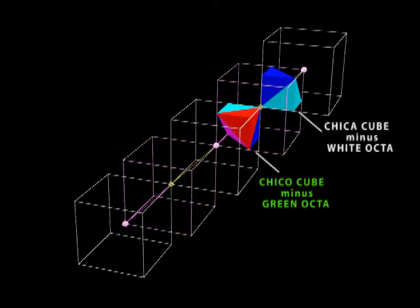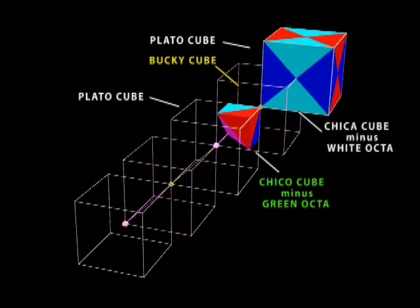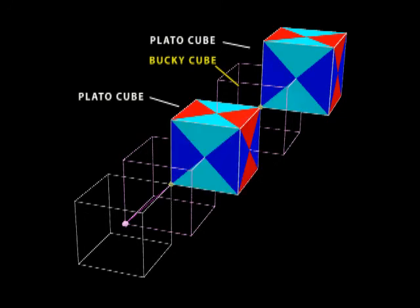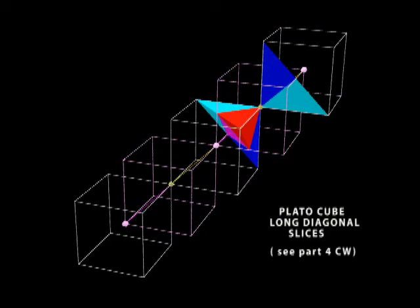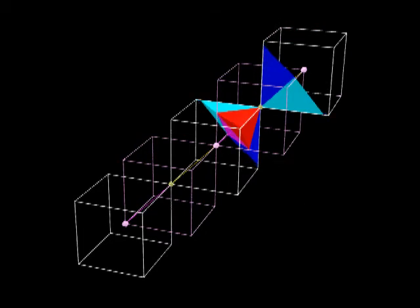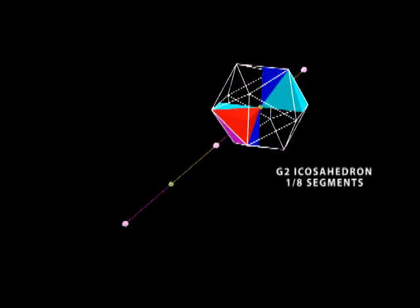So you can see in this setup, we are centered in the Bucky cube. And we're surrounded by two Plato cubes. So let's fill these two Plato cubes up. So look what we have here again. It slices down just like I said in my last video. And it makes two segments of a generation two icosahedron.